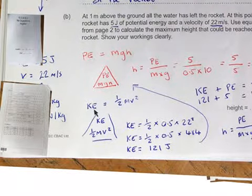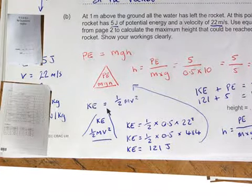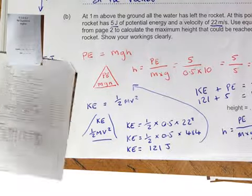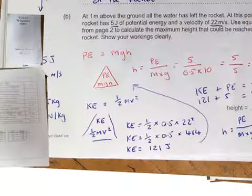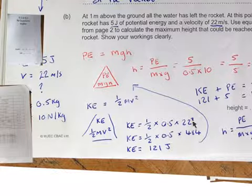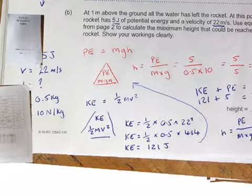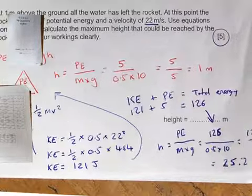So I need to use my KE, which is kinetic energy, equals half mv squared. Got that from the formula sheet there, KE half mv squared. I don't need to rearrange because I'm looking for my kinetic energy. I know my mass and I know my velocity at this point. So it's going to be 0.5 times 22 squared. Remember to square that, that's a step that always gets forgotten. You come out with 121 joules. It's got 121 joules of kinetic energy and it's also got 5 joules of potential energy. So my total energy here now is 126 joules.